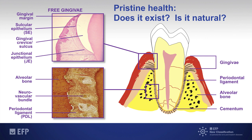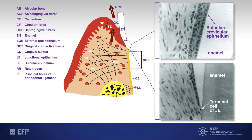Moving on to the thorny issue of pristine health — on this slide you can see a complete absence of gingival inflammation histologically within the top photomicrograph. The junctional epithelium and the sulcular epithelium are intact and we have a perfect anatomy. Below that, you see the periodontal ligament attaching to the alveolar bone on the left-hand side and to the root cementum on the right-hand side, with a complete absence of inflammation and very nice neurovascular bundles.